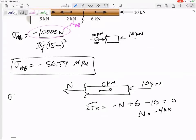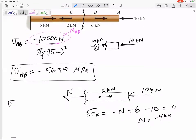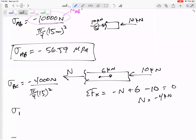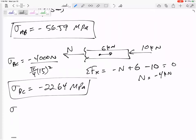Stress inside section BC would be negative 4,000 newtons, pi by 4, 15 squared. Stress inside section BC, negative 22.64 MPa.